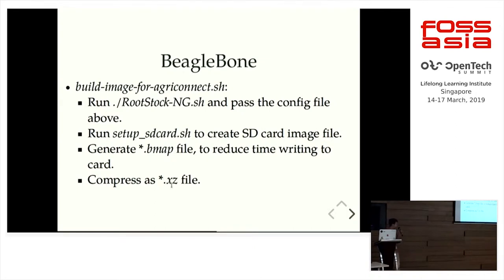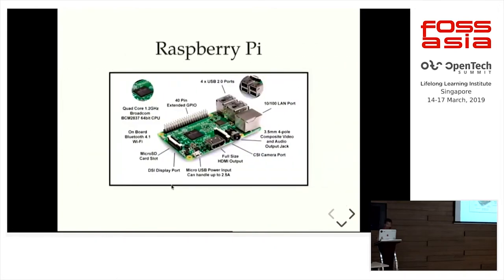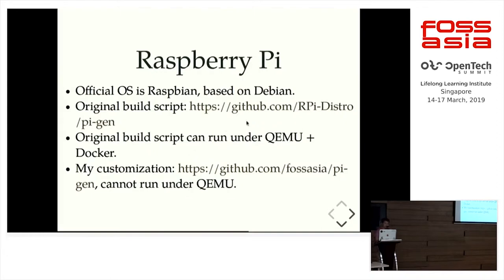We also want to compress the image file so that other people can download it. Here is for Raspberry Pi. The process of customization for Raspberry Pi is different. Here you can see the build script of Raspberry Pi. What's good about the Raspberry Pi build script is that it can run under QEMU and Docker, which means you can run it on your PC.